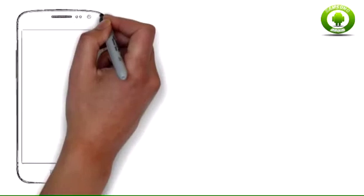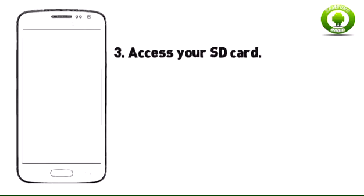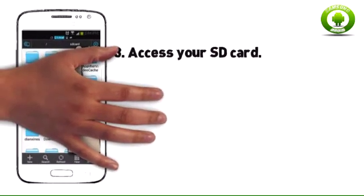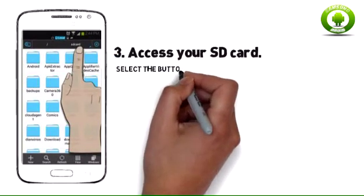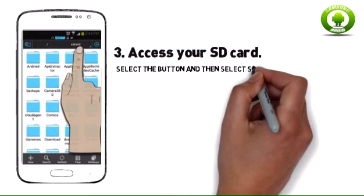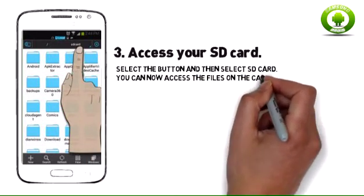Step three: Access your SD card. From the main page of ES File Explorer, locate the storage button at the top. The button should contain a small blue triangle at the bottom right corner. Select the button and then select SD card. You can now access the files on the card.